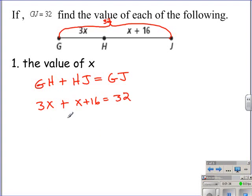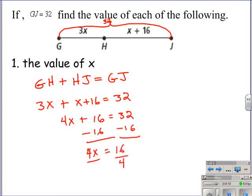We solve this equation. First we combine like terms. 3x plus x is 4x, and we write down the rest of the equation. Next you will subtract 16 from both sides, and that will leave you 4x is equal to 16. And finally you are going to divide each side by 4, which tells us that the value of x is equal to 4.